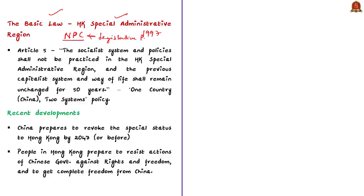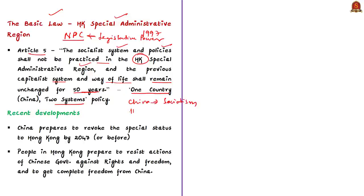Article 5 of the Basic Law states that the previous capitalist system and way of life shall remain unchanged for 50 years. This period of 50 years was also mentioned in the declaration, and this is what we refer to as the 'one country, two systems' policy of China. In mainland China, the socialist system is to be followed, while in the Hong Kong SAR, the capitalist system is to be followed. This arrangement is to continue until the end of June 2047.